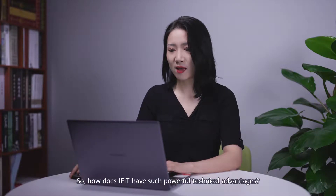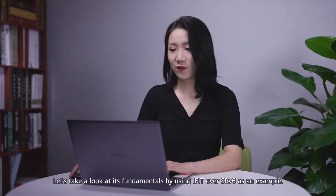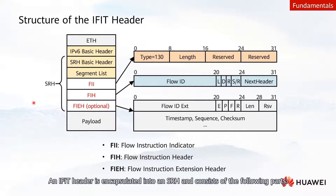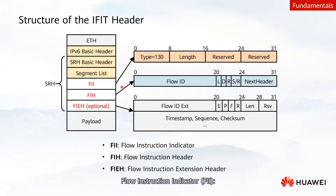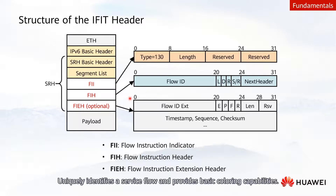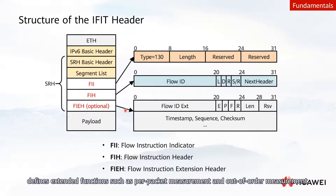How does iFIT have such powerful technical advantages? Let's look at its fundamentals using iFIT over SRv6 as an example. An iFIT header is encapsulated into an SRH and consists of the following parts: the Flow Instruction Indicator, which identifies the beginning of an iFIT header and defines its overall length; the Flow Instruction Header, which uniquely identifies a service flow and provides basic coloring capabilities; and the Flow Instruction Extensions Header, which defines extended functions such as per-packet measurement and out-of-order measurement.